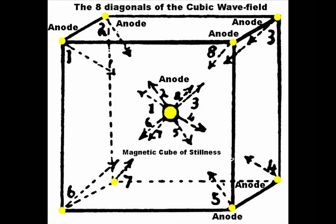It must be noted that the nine cathode planes of the cube represent the static conditions of electric motions within a magnetic cube wavefield of space, because they are direct reflections of the electrical motions within the cube. The dynamic spiraling electric motions are seen in the eight diagonals of the cube as pictured here.